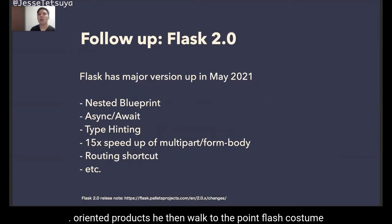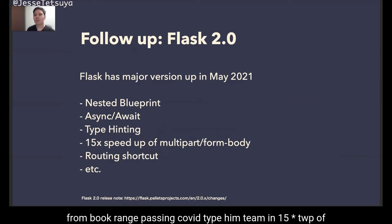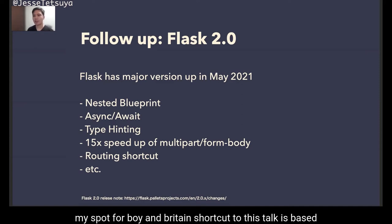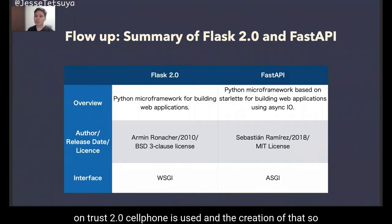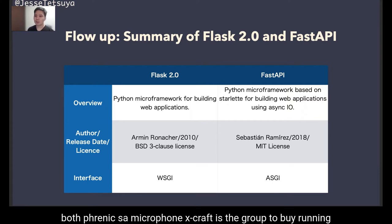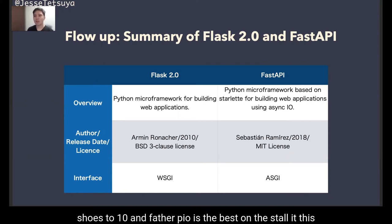As a follow-up: Flask had a version upgrade from version 1 to version 2 in May 2021. In this release Flask included nested blueprints, async/await, type hinting, a 15x speed-up of multipart form body parsing, and routing shortcuts. This talk is based on Flask 2.0. For audiences who have never used Flask or FastAPI, both are micro-frameworks. Flask was developed by Armin Ronacher in 2010, and FastAPI was developed by Sebastián Ramírez in 2018 based on Starlette, meaning FastAPI is a wrapper framework around Starlette.